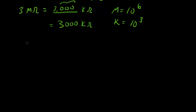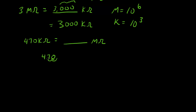Let's go the other way: say we have 470 kilo ohms and we want that in mega ohms. We need to move the decimal point 3 places in the other direction, because mega is 10 to the 6th and kilo is 10 to the 3rd — a difference of 3. So we take 470 and move the decimal 3 places to get 0.470 mega ohms, which is the same as 470 kilo ohms. It helps to think about whether your result should be a larger or smaller number.